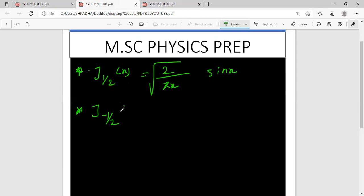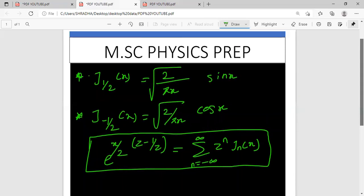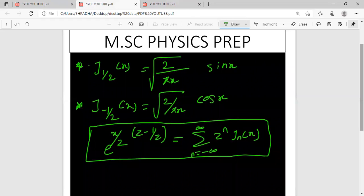For the generating function, e to the power x over two times t minus one by t equals summation from n equals minus infinity to infinity of t to the power n JN of x. The Bessel function is not so much, so we will not learn details. The amount for MSc entrance is necessary to learn. Please like, share and subscribe to my youtube channel and don't forget to click on the bell icon. Thank you.